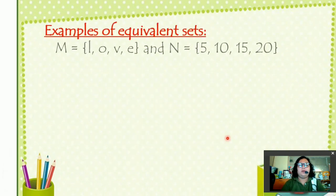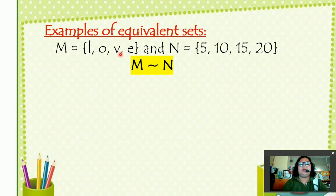Examples of equivalent sets. We have two sets. Set M, the elements are L, O, V, E. Set N, the elements are 5, 10, 15, 20. If we are going to get the cardinality of set M, we have 4. Set N, we also have 4. So that is why they are considered equivalent sets. We can use the symbol to indicate that set M is equivalent to set N.